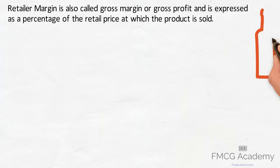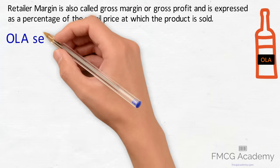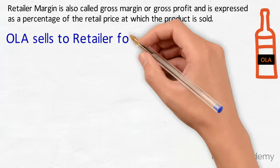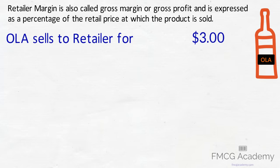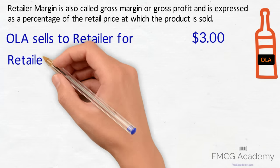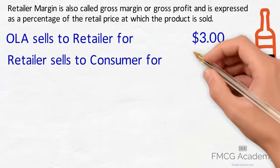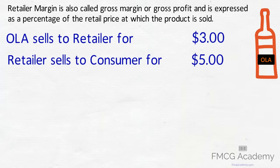We explain this with a simple example of a product called Ola. Ola sells its orange drink for three dollars to the retailer. The retailer sells Ola for five dollars to the consumer.